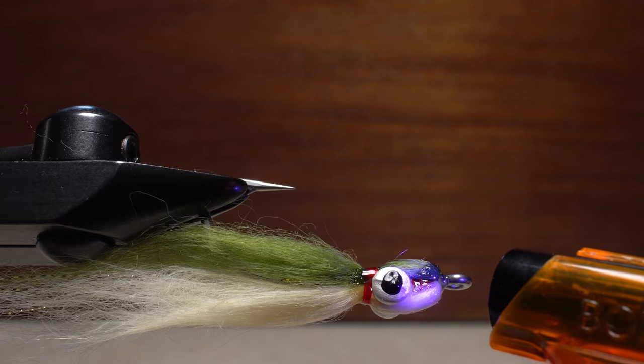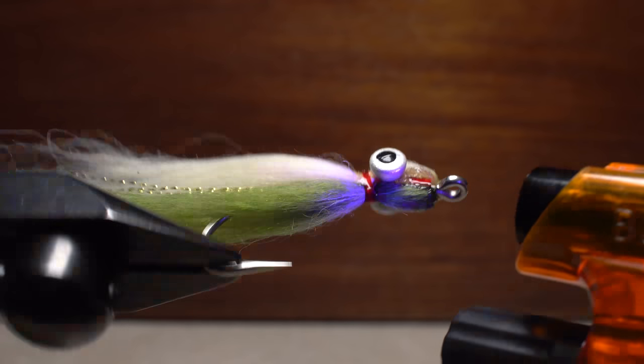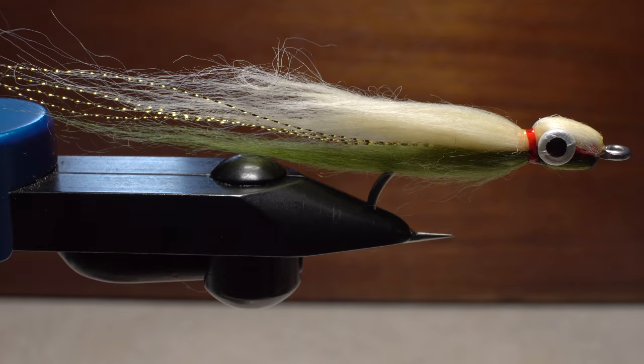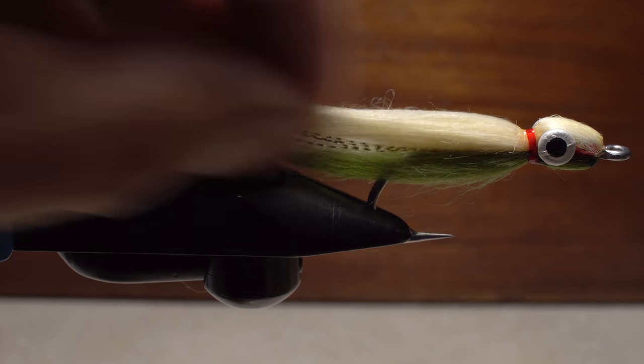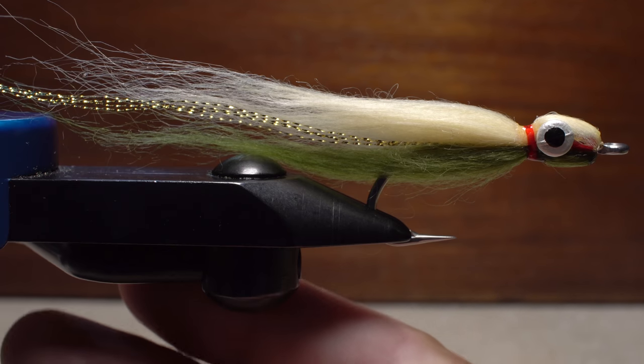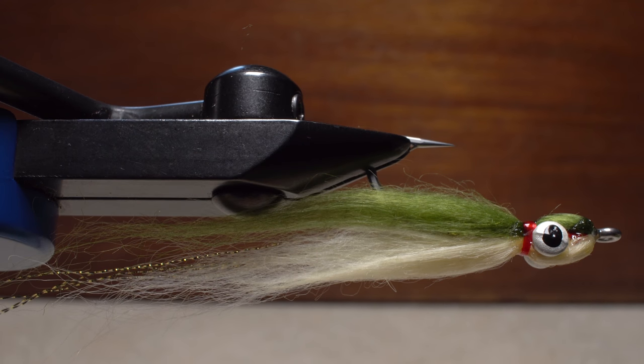I know the question on everybody's lips, will the craft fur foul in the hook bend? And the answer is yes, occasionally. But unfouling it's easy. I believe the motion of the craft fur, along with the increased durability, make it well worth the effort. As with all Clousers, this one rides with the hook point up and moves with that wonderful Clouser jigging motion.